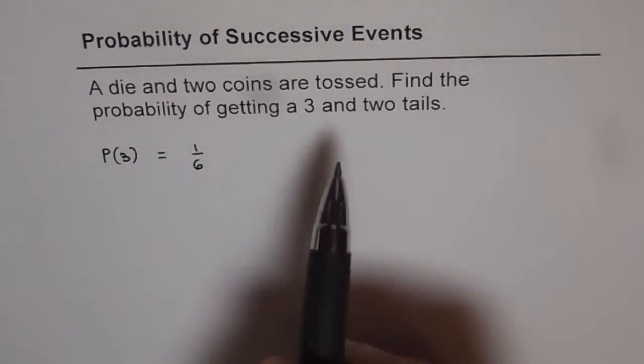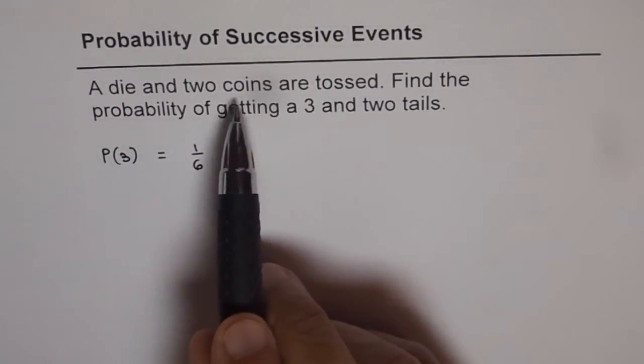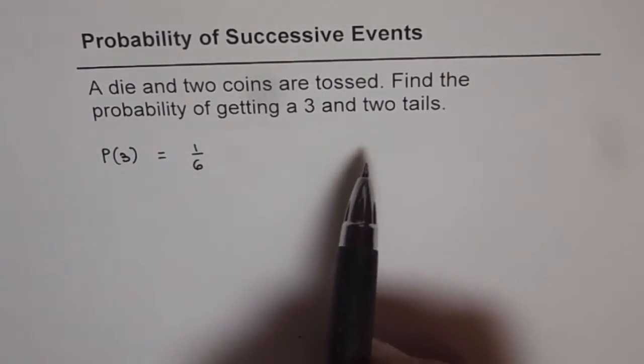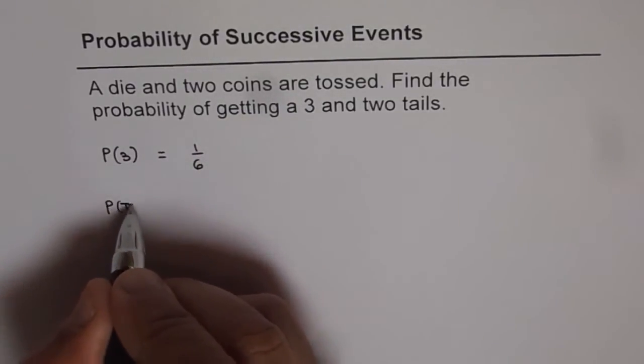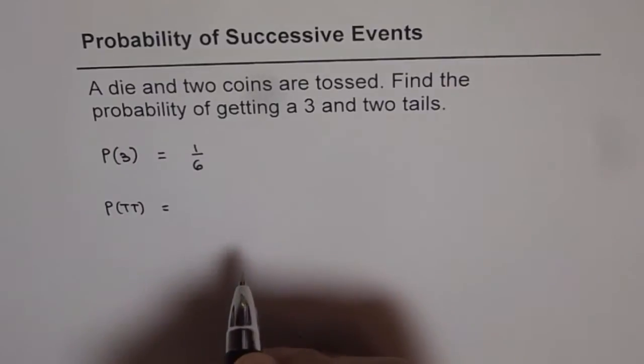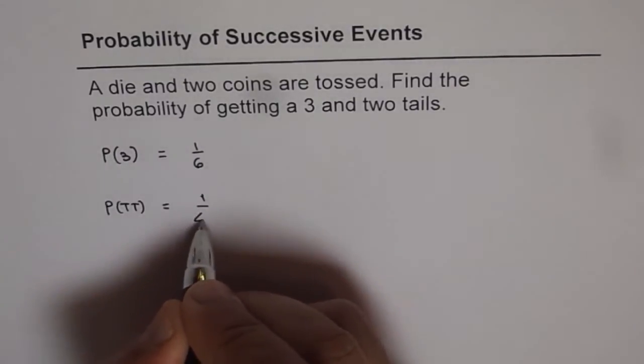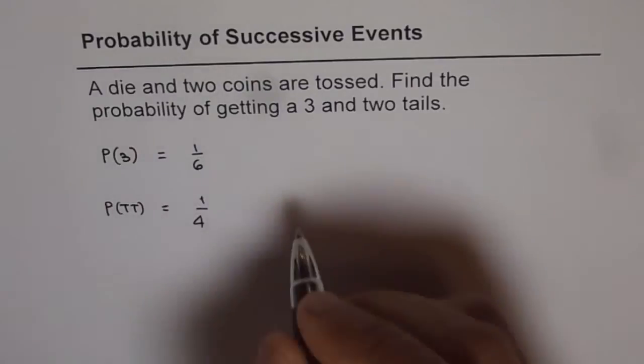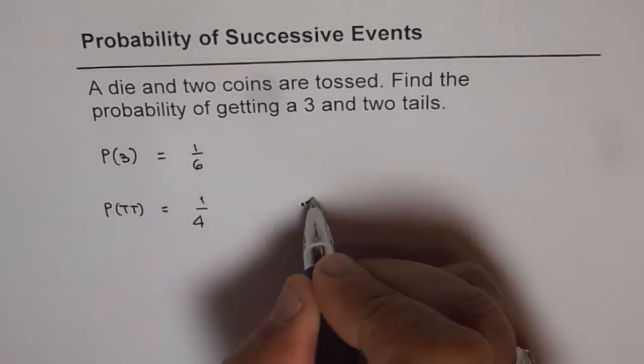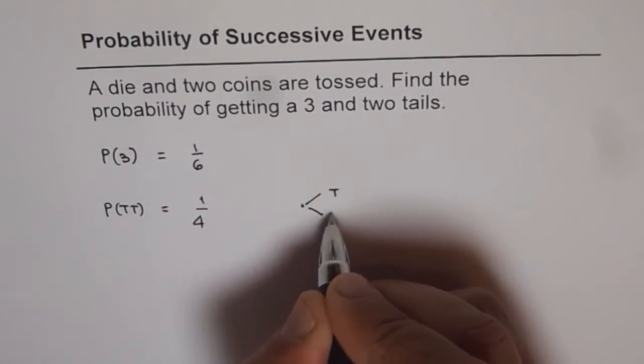Now when two coins are tossed, the probability of getting two tails, that is probability of getting tails and then tails, is 1/4. How do we get this?